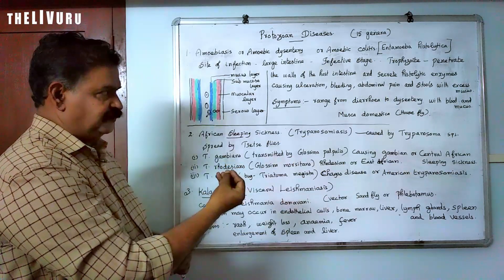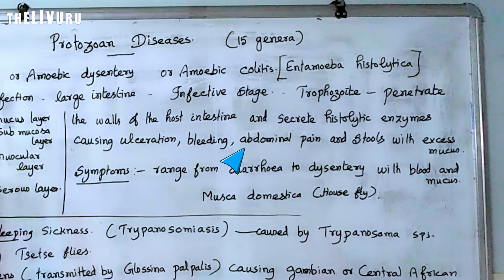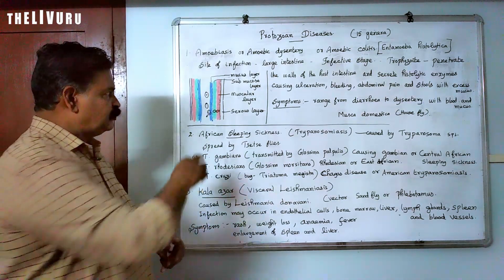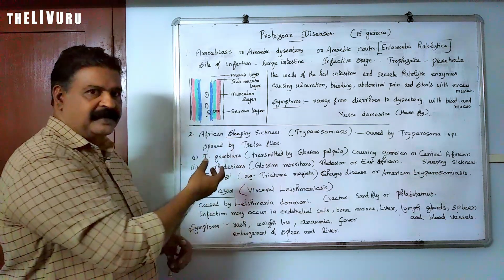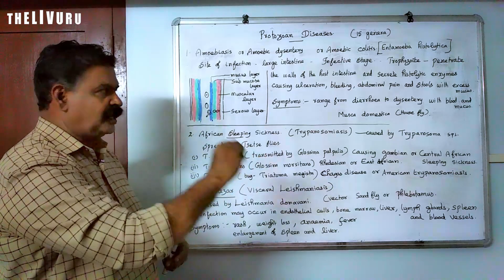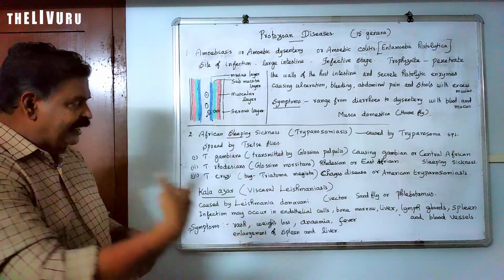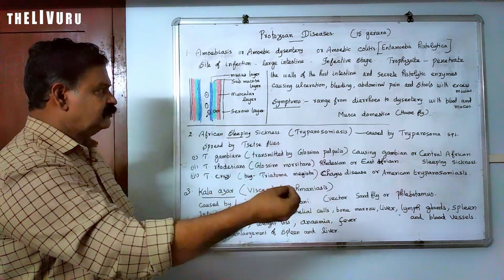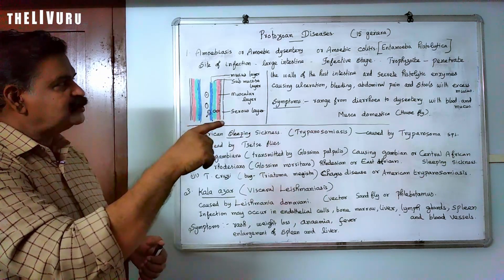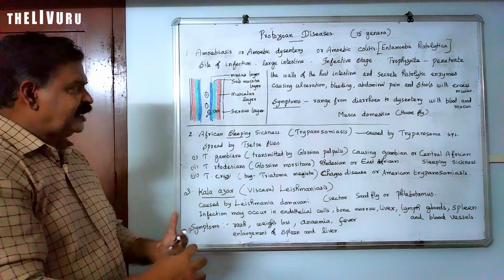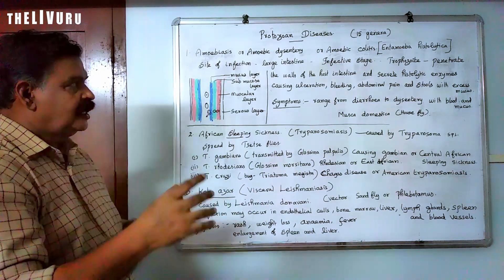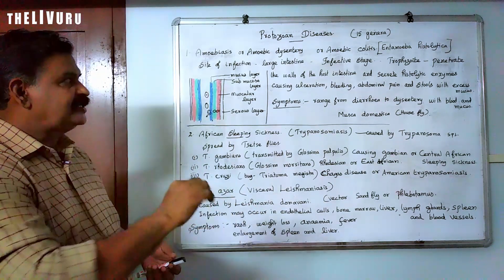Ulceration causes bleeding, blood in stool, abdominal pain, and stools with excess mucus. If a person consumes contaminated food and water, Entamoeba histolytica secretes histolytic enzymes leading to bleeding and blood in stool. This is why the condition is called amoebic colitis — colitis refers to inflammation of the colon, and this results in amoebic colitis.